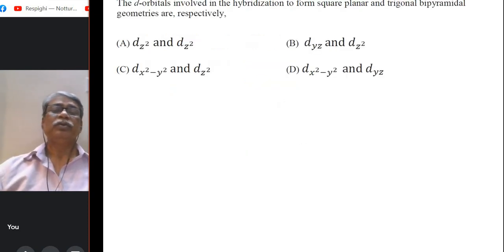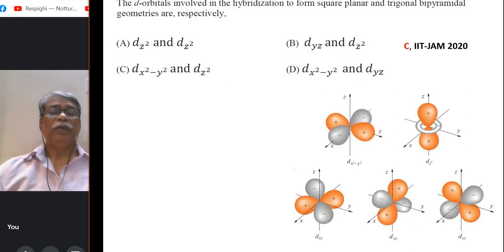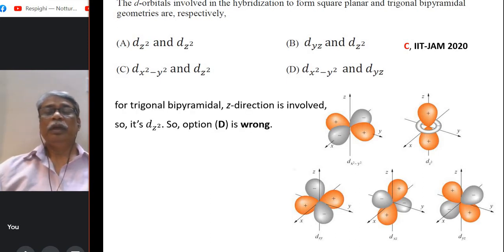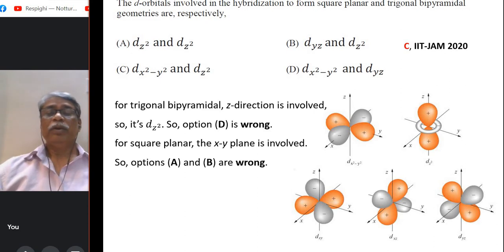d orbitals involved in the hybridization for square planar and trigonal bipyramidal geometries are. You have to look for a while at the diagram for the 5 d orbitals picture and you have to have the information that in trigonal bipyramidal z direction is involved. So in the options the d_z², the first one is for square planar and the second one is for trigonal bipyramidal. So option D is clearly wrong because it is d_yz, but in all other three it is d_z². So at this point A, B and C, any one of them may be correct, but for square planar it is the xy plane that is involved. So option A and option D are out because it is d_z² and d_yz. So only option C is the right one, d_x²-y² for square planar and d_z² for trigonal bipyramidal.